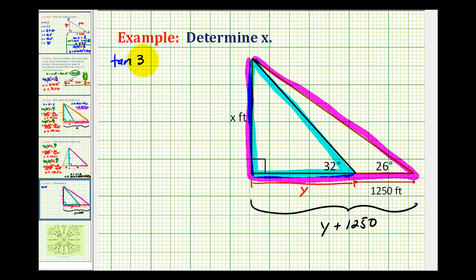So we can say that tangent 32 degrees is equal to x divided by y. We could cross multiply and say that x is equal to y times tangent 32 degrees.